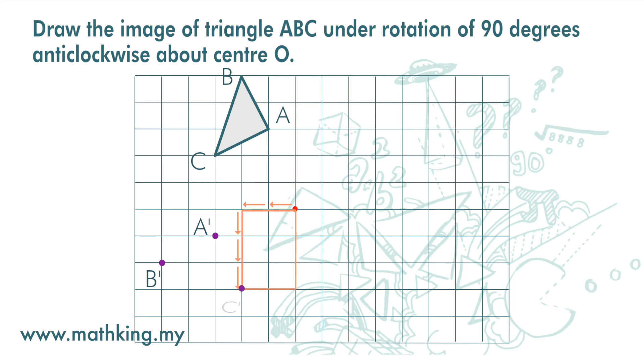And we get point C prime. We join up the points. And we get the image of triangle ABC.